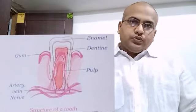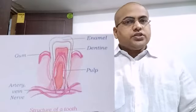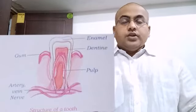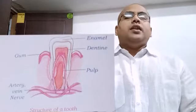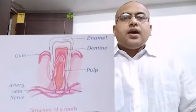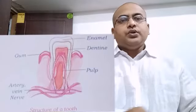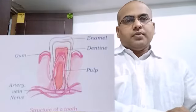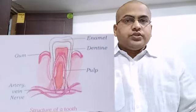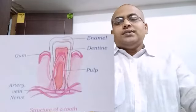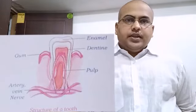Question number two: Name the two sets of teeth. The names of the two sets of teeth are, number one, temporary or milk teeth, and number two, permanent teeth. Now comes the next question: What are the results of tooth decay?